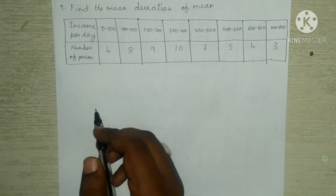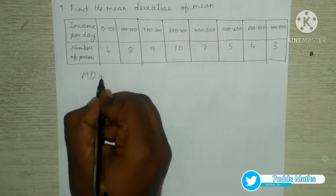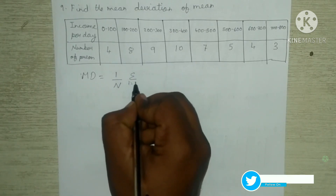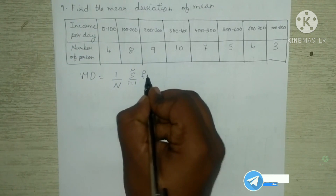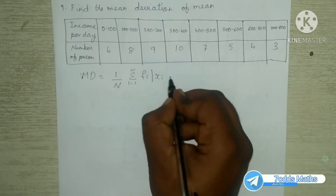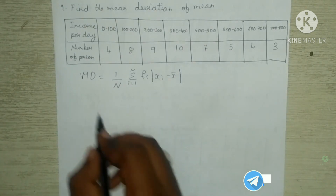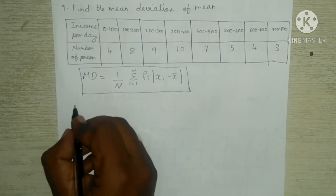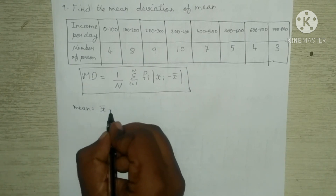For the ninth question — find the mean deviation of mean income per day, where number of persons data is given — the mean deviation formula is: MD = (1/N) × summation from i = 1 to n of f_i × |x_i minus x-bar|, where x-bar is the mean. This is the mean deviation formula.